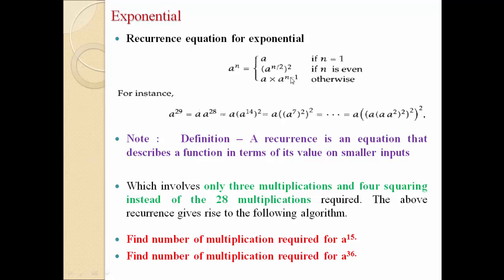So a into a raised to 28. Now for a raised to 28, the value of n is 28. We check: n is equal to 1? No. n is even? Yes — 28 is an even number. So we return a raised to n by 2 whole raised to 2. That is 28 divided by 2 equals 14, whole raised to 2. So in place of a raised to 28, we can write a raised to 14, whole square.